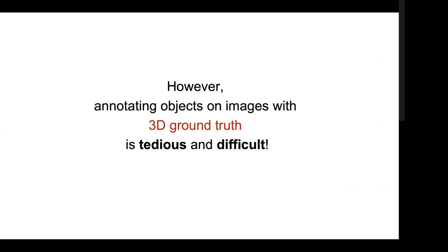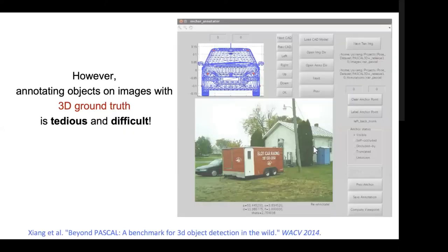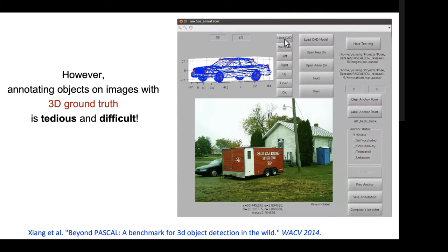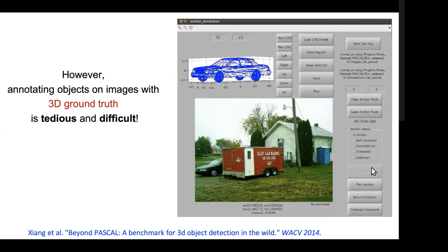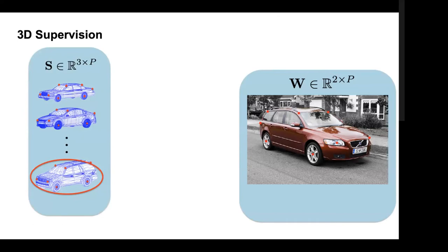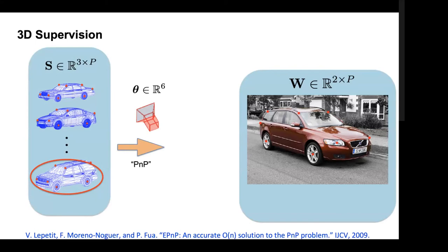Providing 3D labels to train such a system is really hard, tedious, and difficult. The Beyond Pascal benchmark from Silvio Savarese's group illustrates this: you get an image, go through a dictionary of CAD models, choose the right one, then laboriously determine where points are occluded and where they're located. It's a very onerous and error-prone task. More formally, 3D supervision requires labeling 2D landmarks and associating them with 3D shapes from a dictionary. Through PNP we can recover six degrees of freedom and obtain 3D labels.